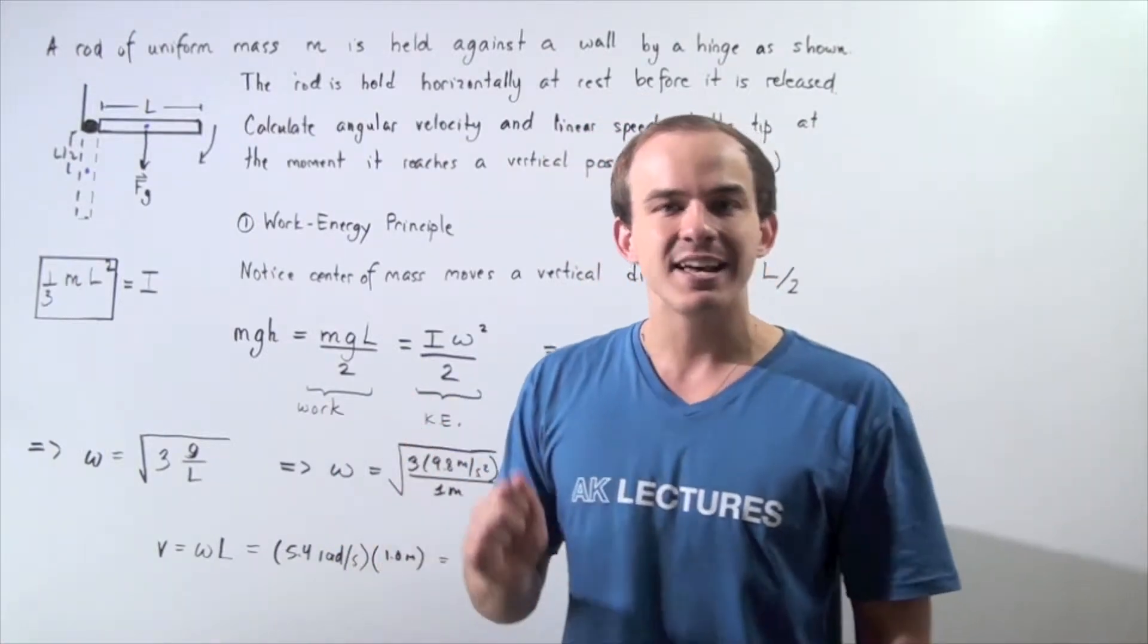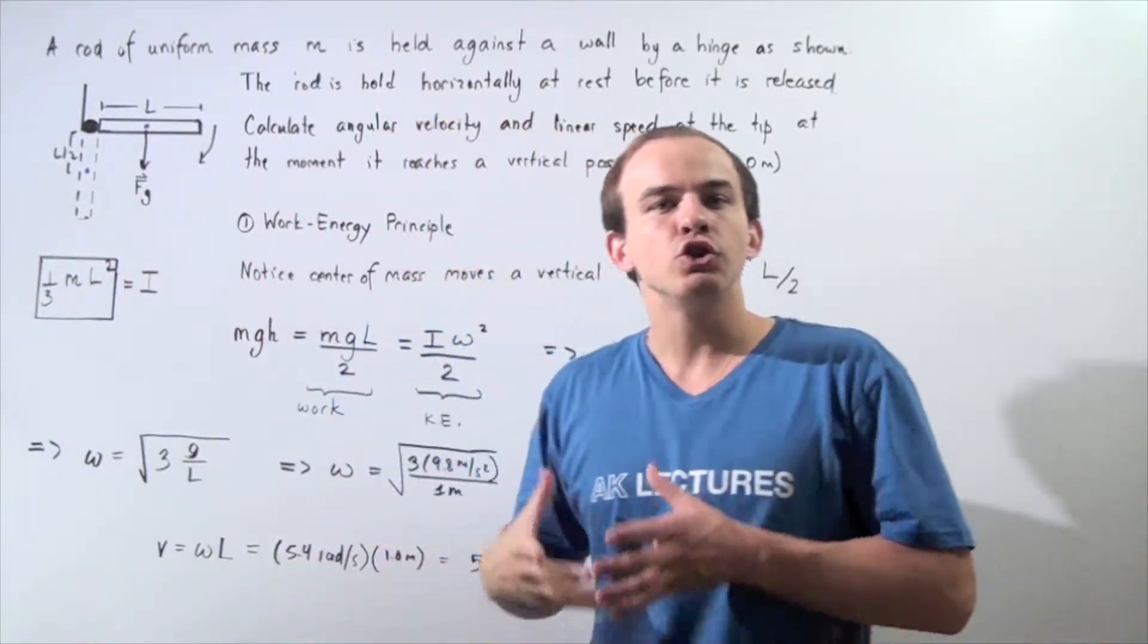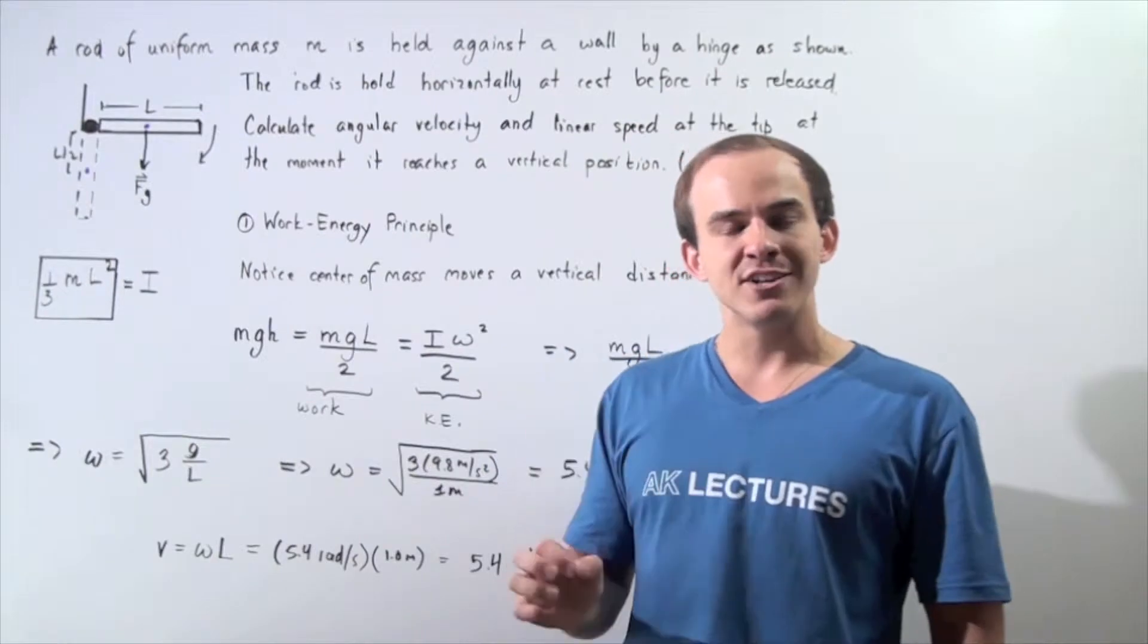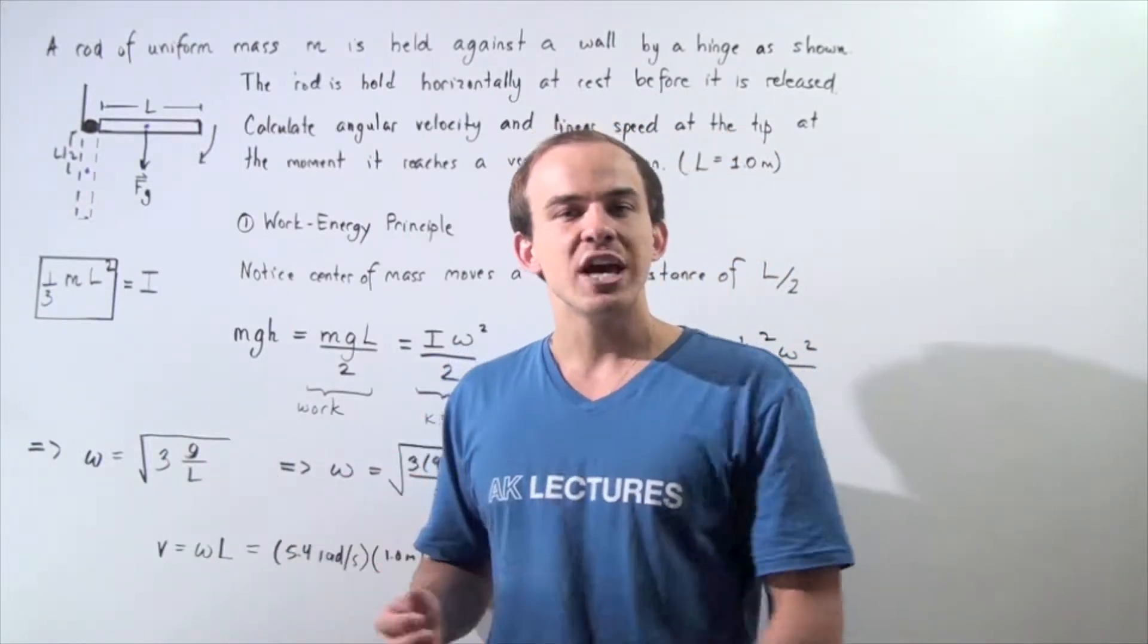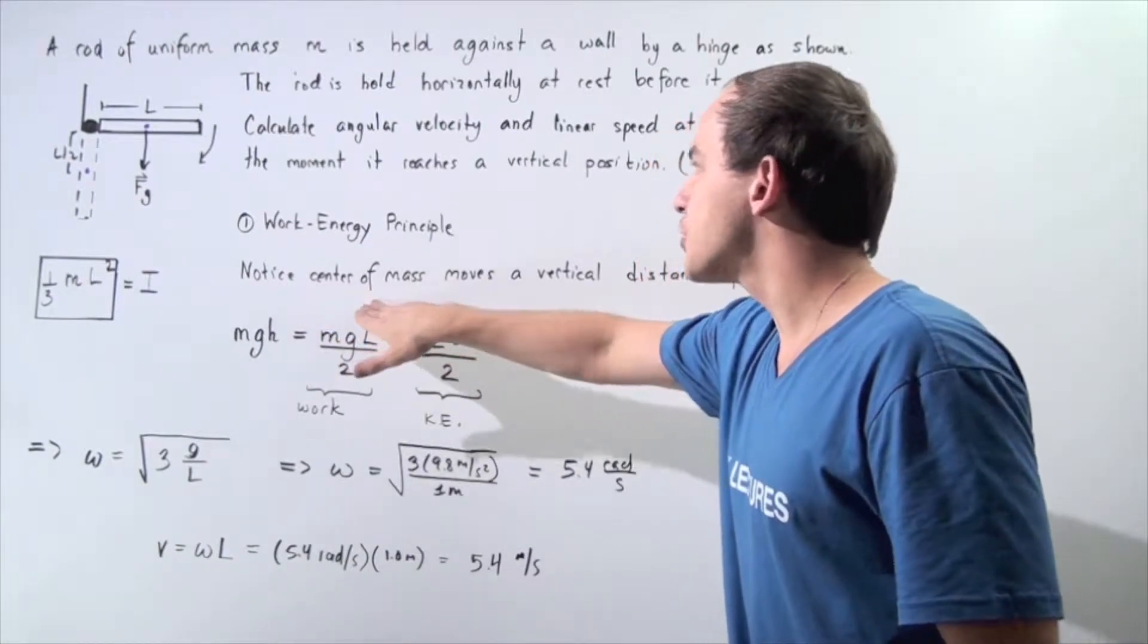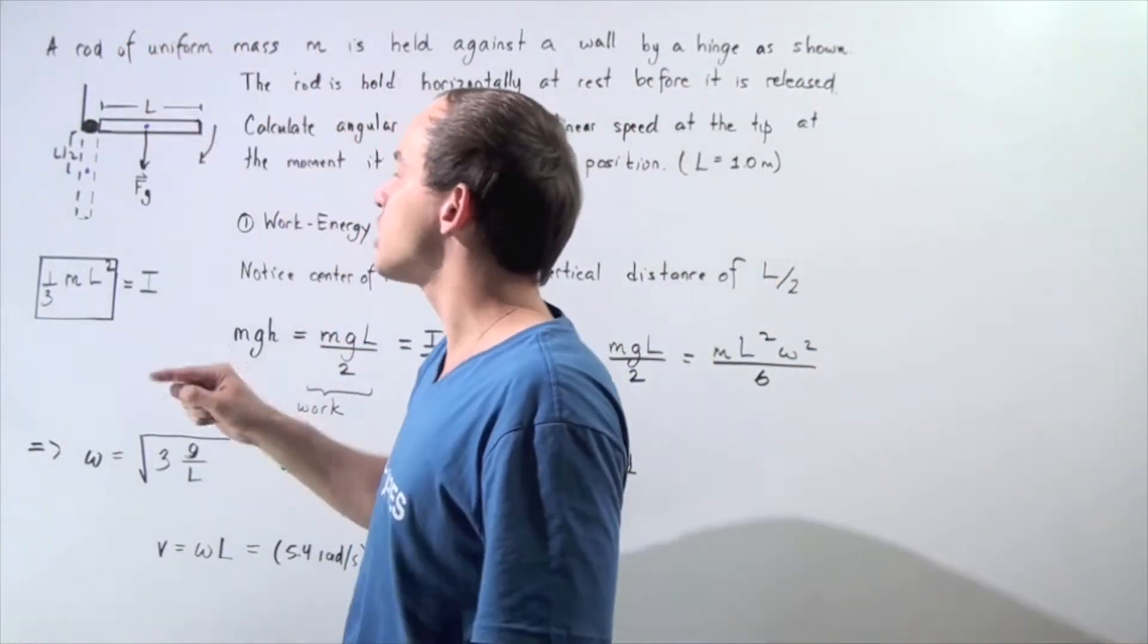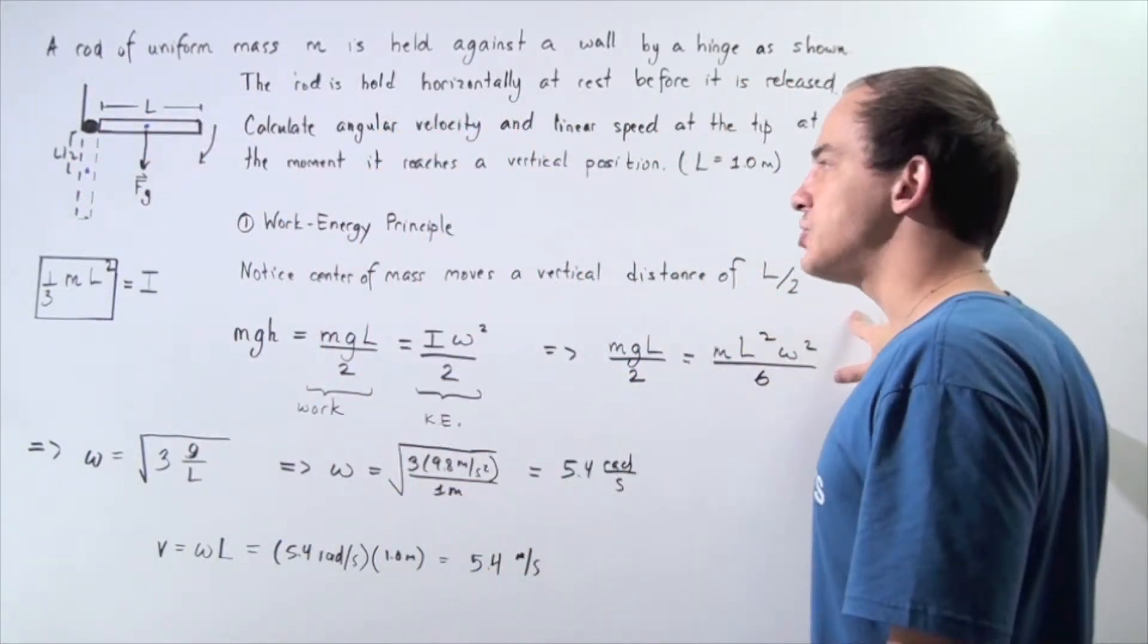That means the work done on the rod by the force of gravity is equal to the kinetic energy of the object that is gained when it travels this position. The object loses a certain amount of gravitational potential energy, and that gravitational potential energy is converted into rotational kinetic energy. Notice the center of mass of the object, which is at the center of the object, moves a vertical distance of L divided by 2.